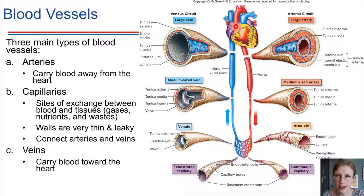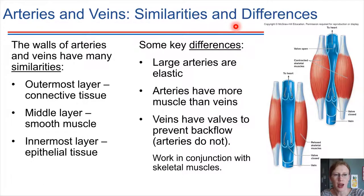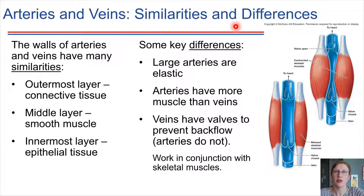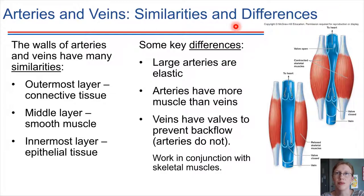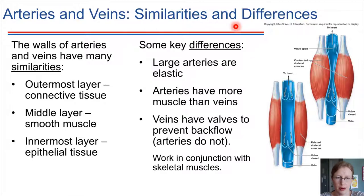Let's compare and contrast arteries and veins. They have similarities and differences. Both have three major layers in their wall structure: an outermost layer of connective tissue, a middle layer of muscle, and an innermost layer of epithelial tissue. Epithelial tissue always lines things, and blood vessels are no different — it lines the inner surface of blood vessels.